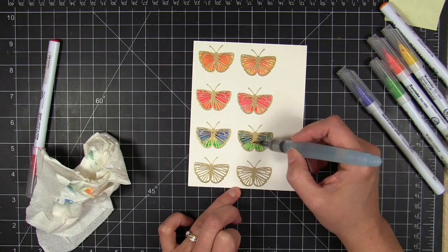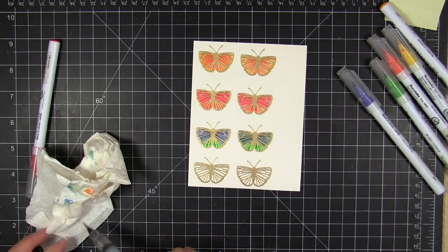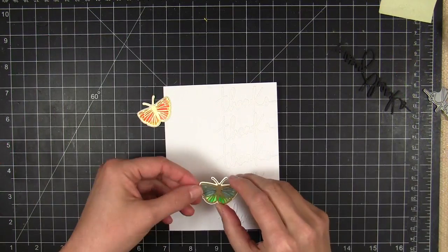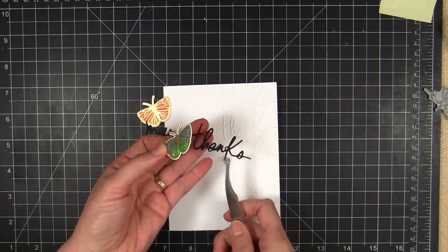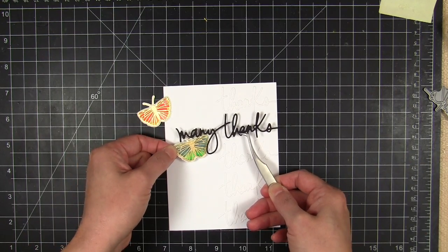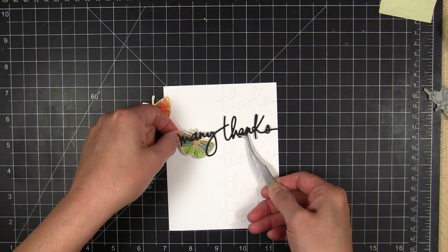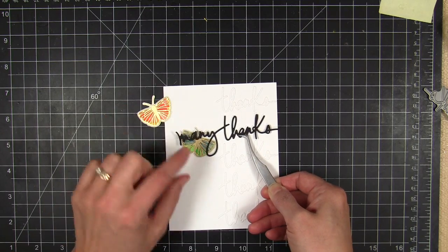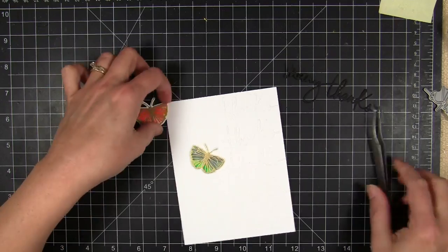Then like I said, I'm gonna go over to my Big Shot and die cut all of these butterflies out. Now at this point I have all my butterflies die cut and I decided I only needed two for this particular design. And I die cut Many Thanks also from black cardstock and I'm just playing around with the placement of these butterflies.